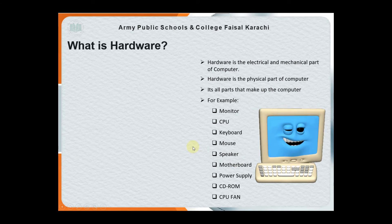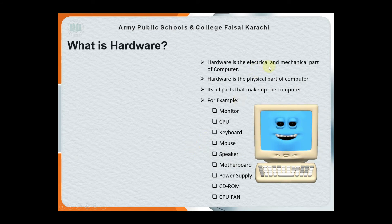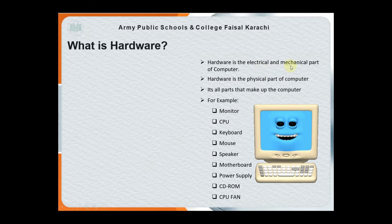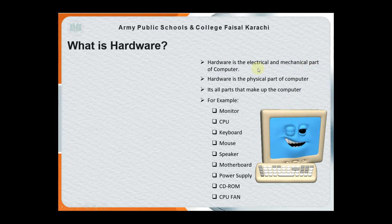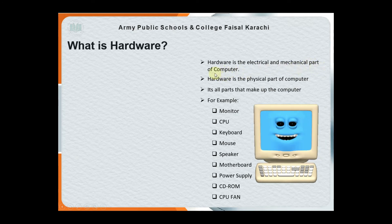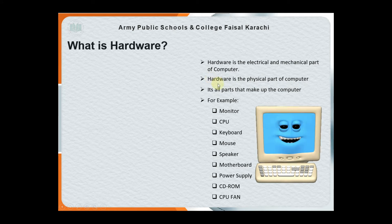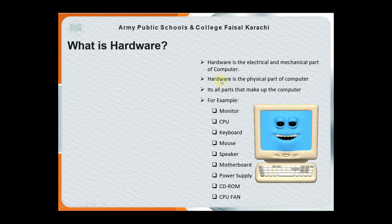So what is hardware? Hardware is the electrical and mechanical part of a computer. Electrical means it can run from electricity — that's why we call it electrical. Mechanical means it has some moving parts — that's why we call it the mechanical part of our computer. Hardware is a physical part of the computer because we can feel it, touch it, and see it.